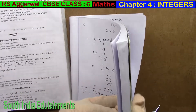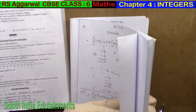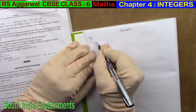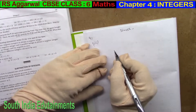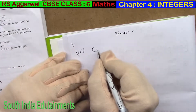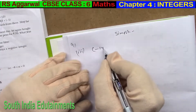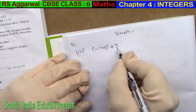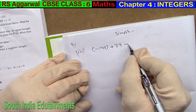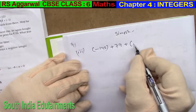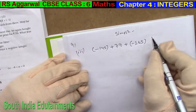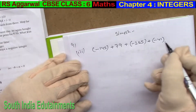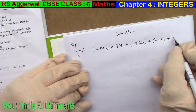Okay, so next sum — copy this. Simplify. Okay, so this is the 9th law. Third sum. Bracket minus 145, bracket plus 79, plus bracket minus 265. Okay. Plus bracket minus 41. Bracket plus 2.